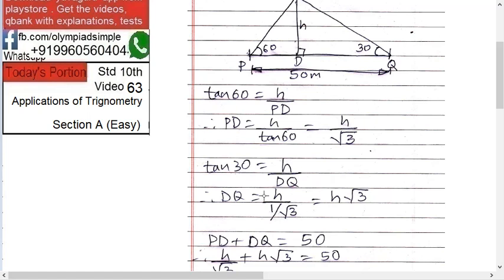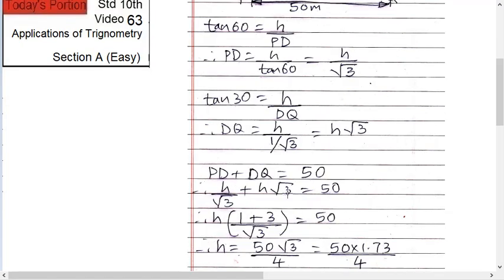tan 60 equals to what? h upon this distance PD. Do you know PD? No. So PD equals to h upon tan 60. tan 60 is root 3, therefore h upon root 3.